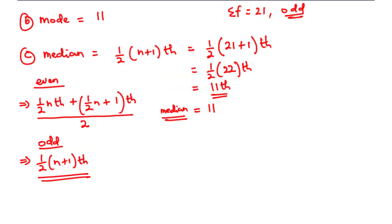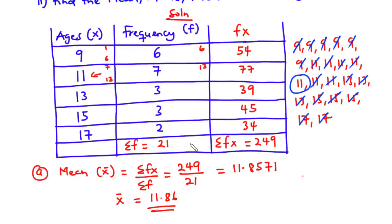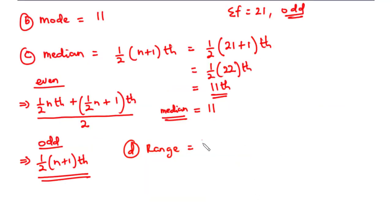Now let's find the range. The range is the difference between the highest value and the lowest value — in this case, the difference between the highest age and the lowest age. The highest age is 17 and the lowest age is 9. So 17 minus 9 is 8. The range is 8.